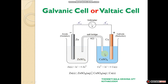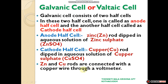The galvanic cell consists of two half-cells. In the first half-cell, a zinc rod is dipped in aqueous zinc sulfate solution. In the second half-cell, a copper rod is dipped in copper sulfate solution. The two metal rods — zinc and copper — are connected with a copper wire through the voltmeter.